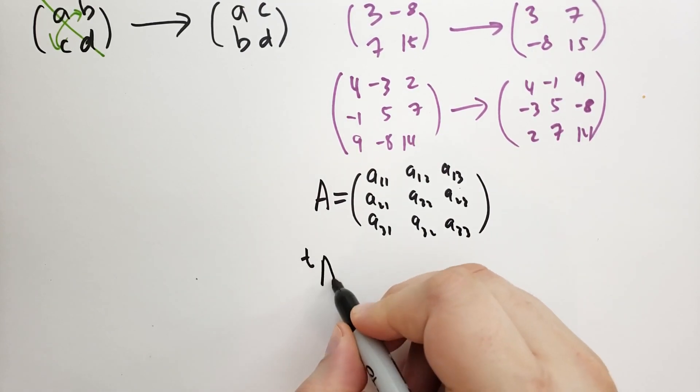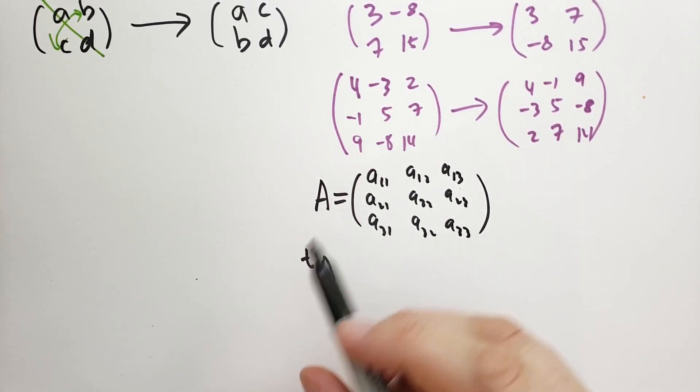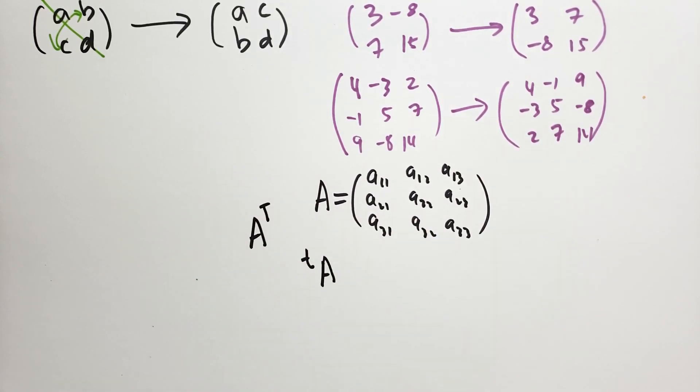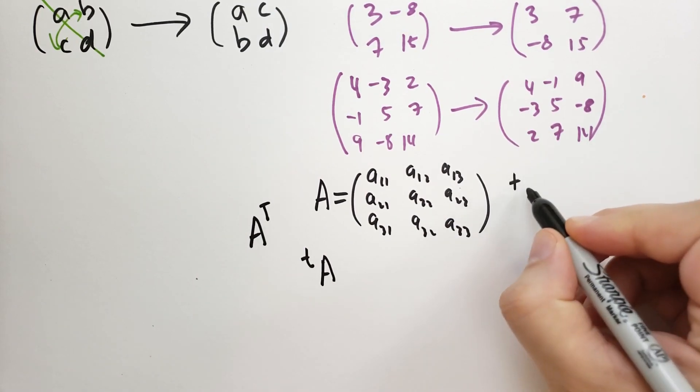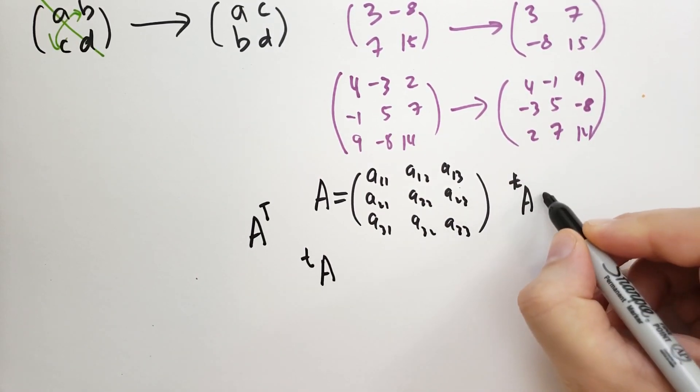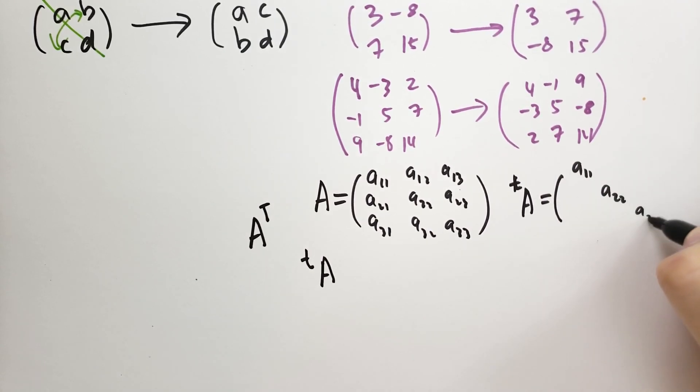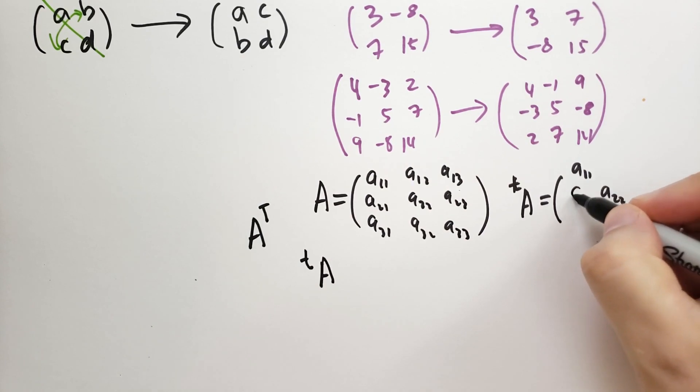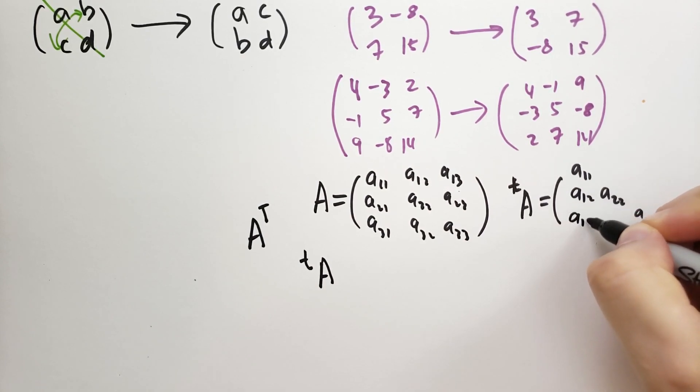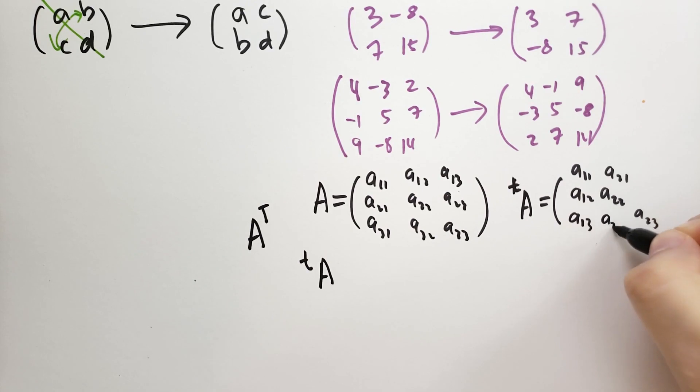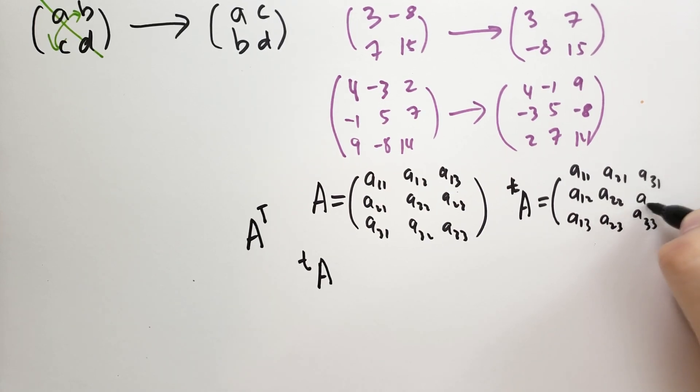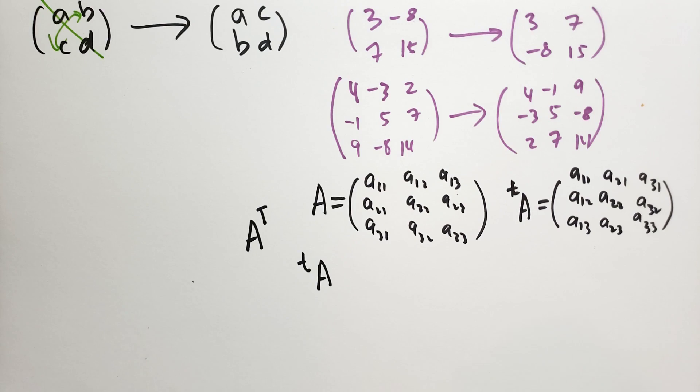So if the transpose of A, the diagonal stays the same. And these guys are going to flip. So it's going to be A12, A13, A21, A23, and then A31, this is 33, A32. So that's what the transpose does.